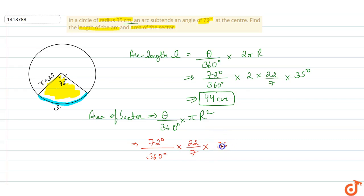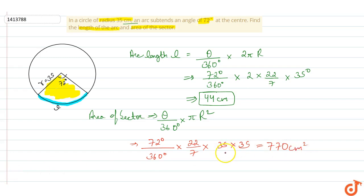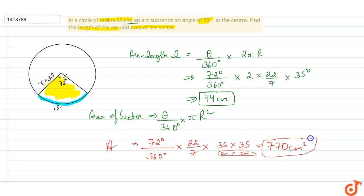Into 35, so we have the area of the sector is 770 cm², because we have radius in centimeter into centimeter, so our area of sector is 770 cm².